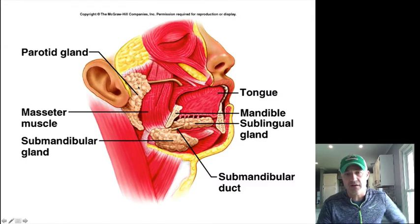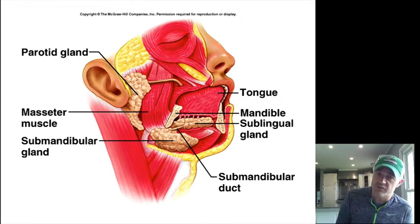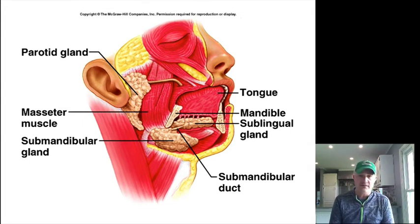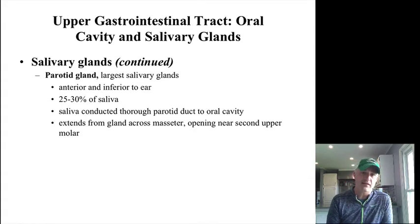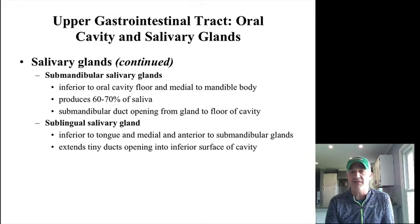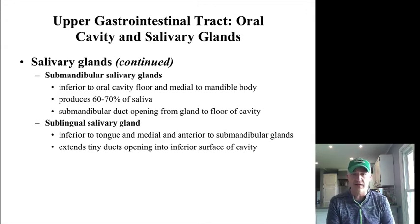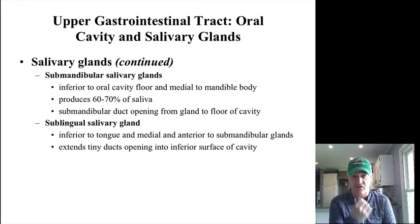Saliva helps moisten food, form a bolus, acts as a solvent for chemicals, and buffers acids, with a slightly alkaline but pretty neutral pH. There are three pairs of salivary glands: the parotid glands out in front of the cheeks (the largest, producing about 30% of saliva — thinking about eating a lemon and feeling your cheeks squeeze is actually the smooth muscle of the parotid glands anticipating that), the submandibular glands underneath the oral cavity that make the vast majority of saliva, and the sublingual glands underneath the tongue with tiny ducts — the ones that sometimes accidentally shoot saliva out of your mouth.